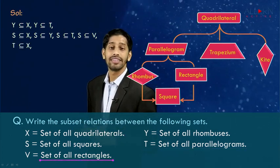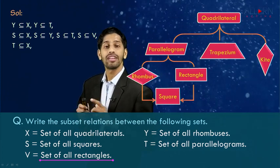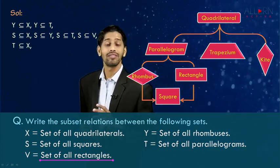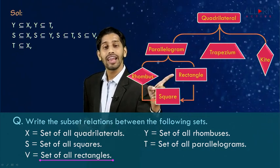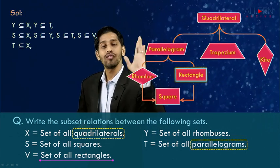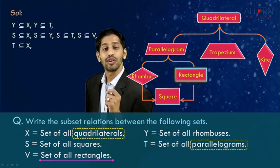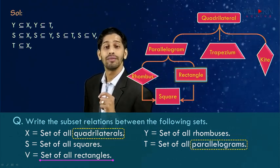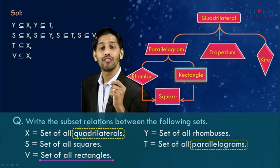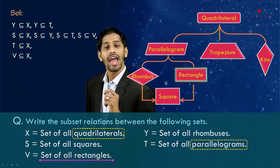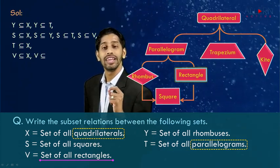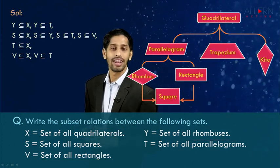Now observing set V, the set of all rectangles. From the diagrammatic representation, rectangle is a part of parallelogram as well as a part of quadrilateral. The set of all rectangles is denoted by capital letter V, so we say that V is a subset of X (quadrilateral), and V is a subset of T (the set of all parallelograms).